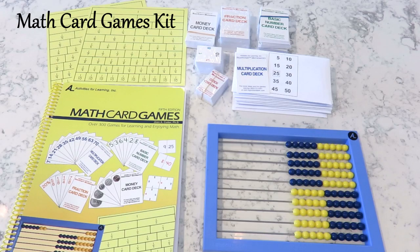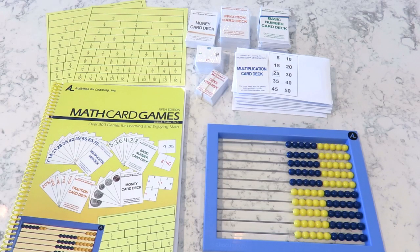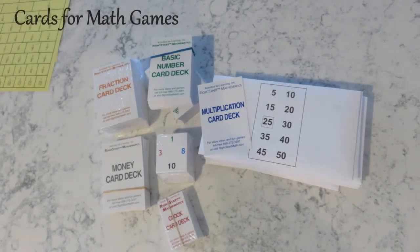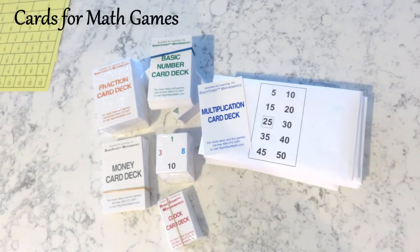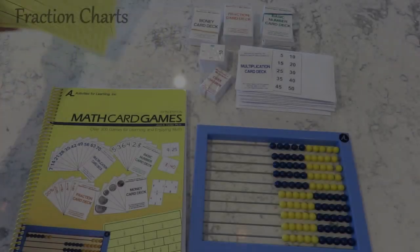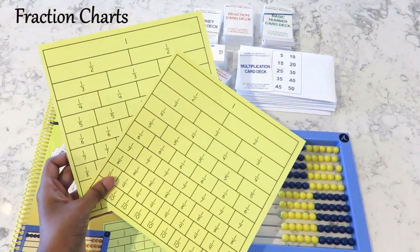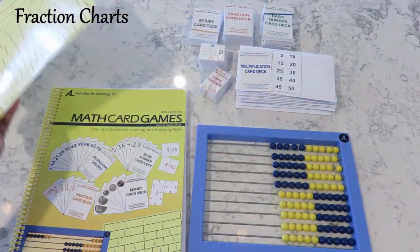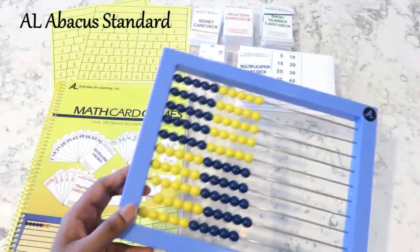The math card games kit included everything else I needed. It comes with the math card games book which has over 300 games and a CD. I'll give you a glimpse of that later. It comes with all the cards you need for the math games - money cards, basic number cards, fraction cards, clock cards, and multiplication cards. It also comes with two fraction charts and the all-important abacus.